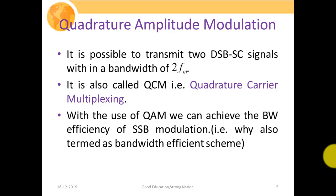It is possible to transmit two double sideband suppressed carrier signals within the bandwidth of a single DSBSC signal, which is equivalent to twice the bandwidth of FM. This is also called quadrature carrier multiplexing, since we are passing two DSB signals over the same range of frequencies. Both signals have the same frequency but are 90 degrees phase apart, hence the name quadrature carrier multiplexing. With QAM we can achieve the bandwidth efficiency of SSB modulation, which is why it is termed a bandwidth efficient scheme.